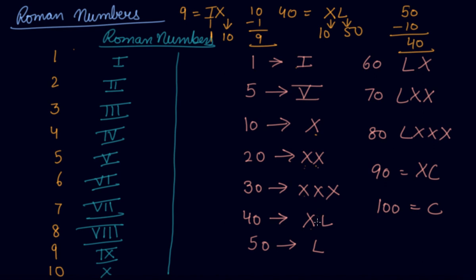Now, if a bigger digit is in front and the smaller digit is at the end, we add the numbers. For example, LXX — L is 50, X is 10, X is 10, so we add: 50 plus 10 plus 10 equals 70. This is how we find Roman numbers.